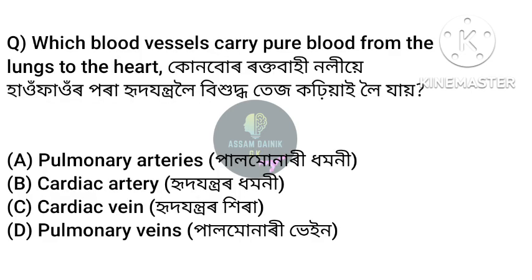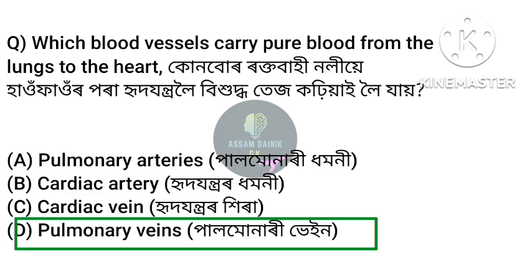Which blood vessels carry pure blood from the lungs to the heart? — Anchar Option D: Pulmonary Vein. The pulmonary vein carries pure blood from the lungs to the heart.